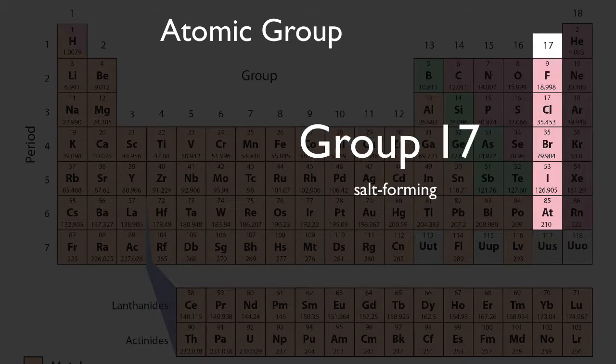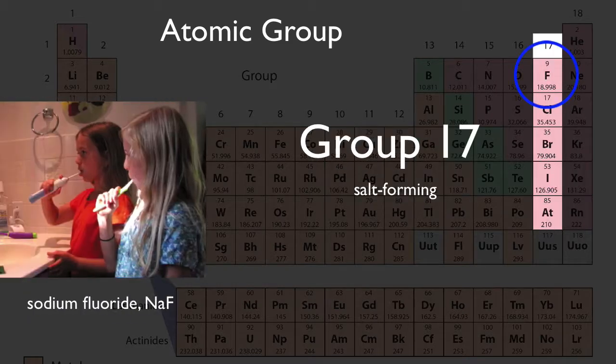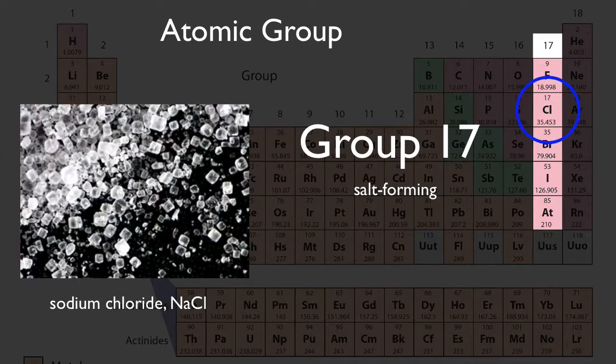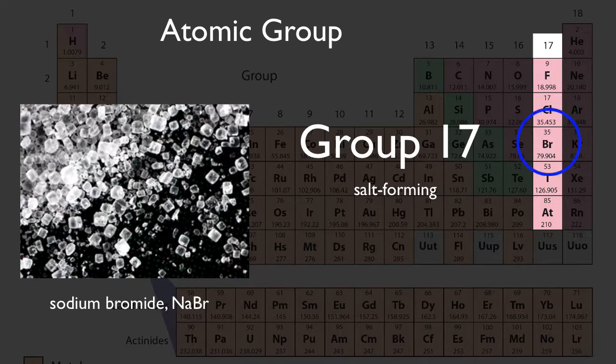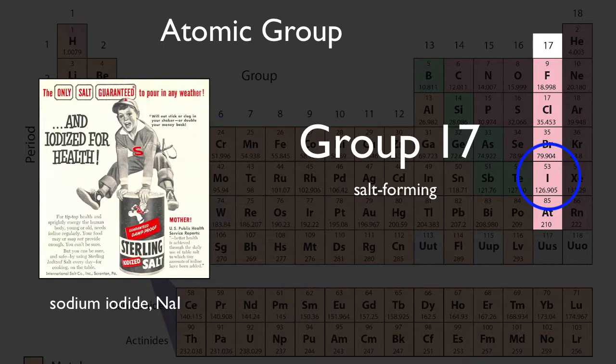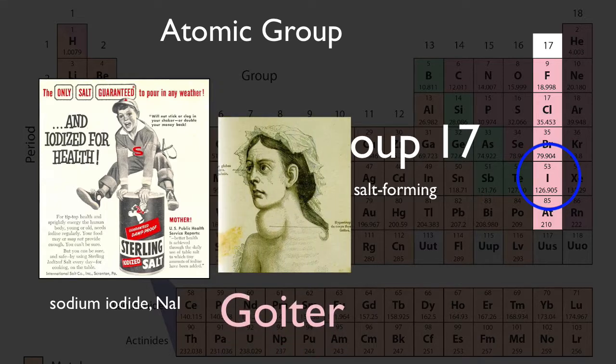The group 17 elements all tend to form salts, such as sodium fluoride, which, in small amounts, is good for your teeth. Or sodium chloride, found in table salt. There's sodium bromine, you'll find plenty of that in our oceans. And sodium iodine, which is what they add to iodize table salt. You see, the small amount of iodine helps prevent a medical condition called goiter, which is a growth in the thyroid gland.